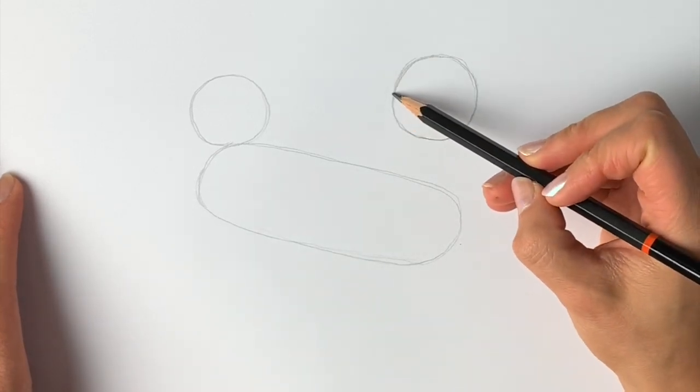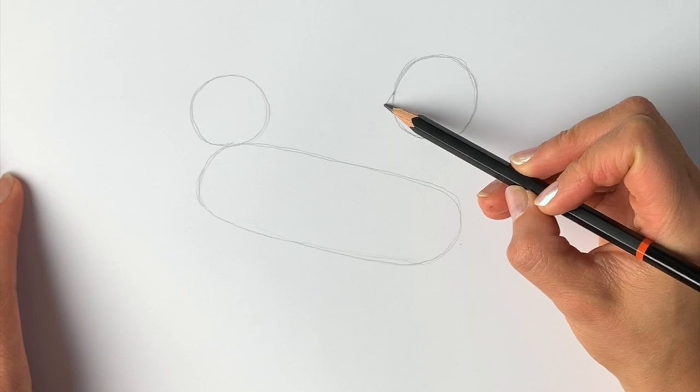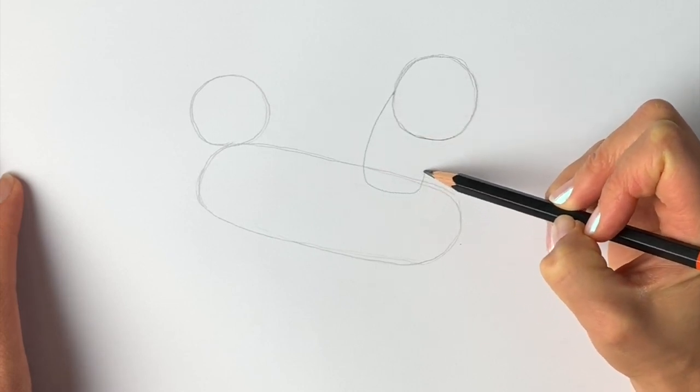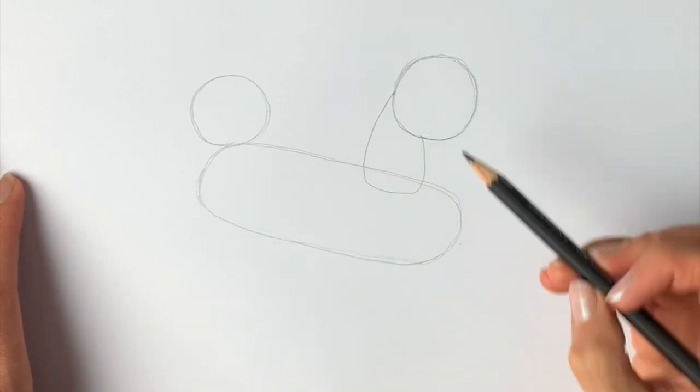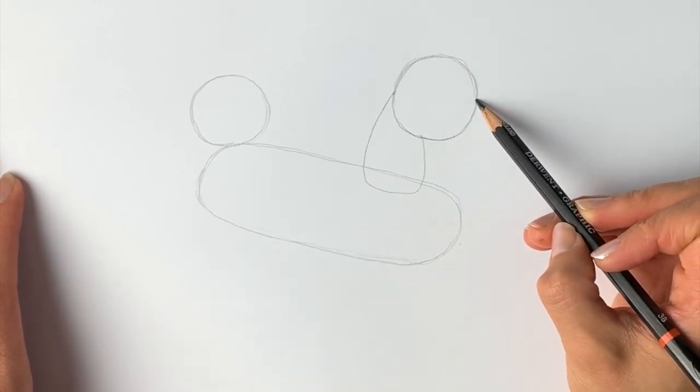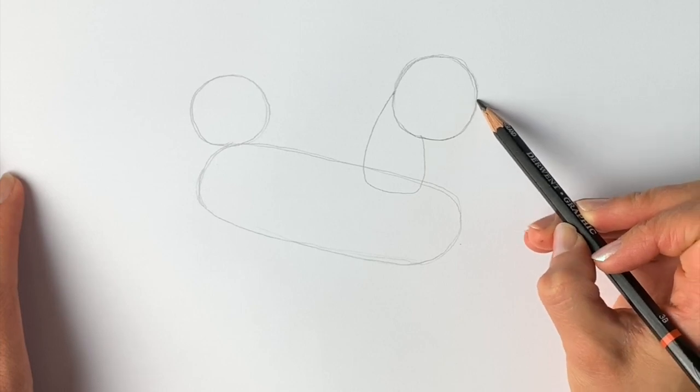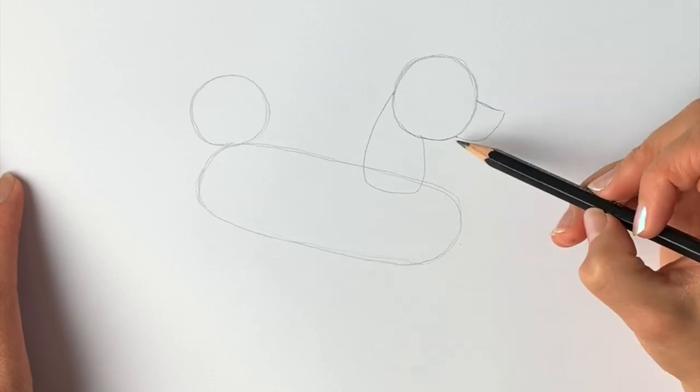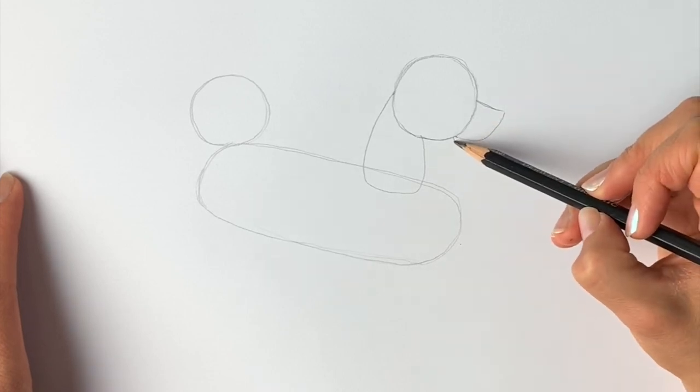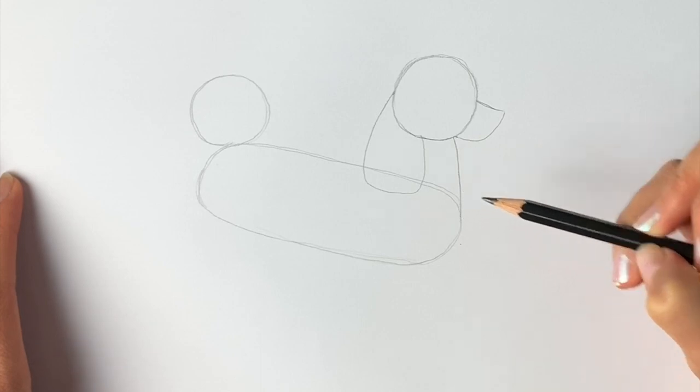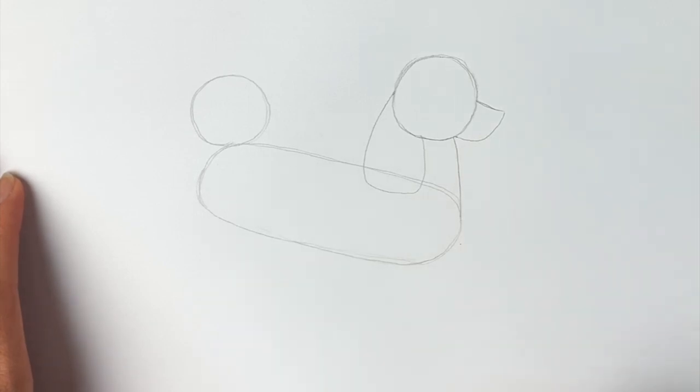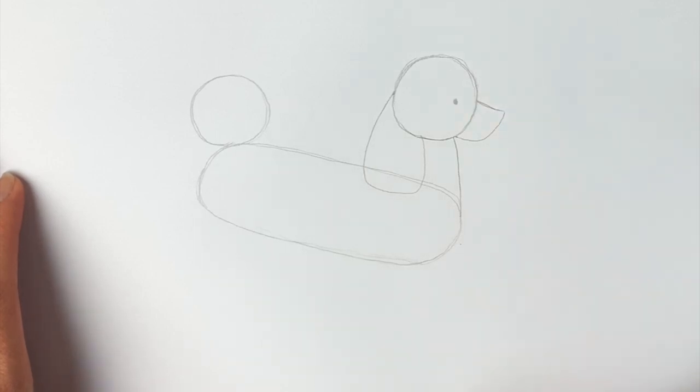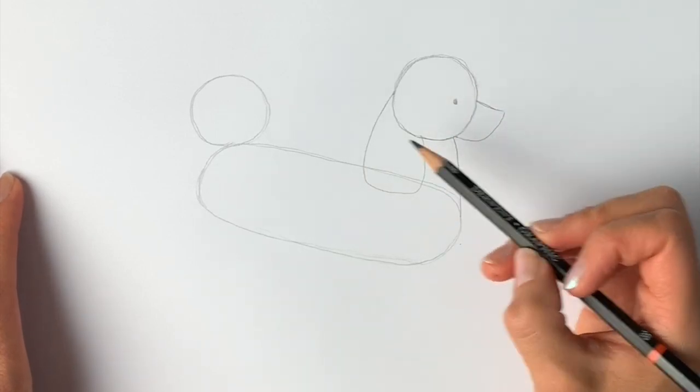Now we're going to draw the ear. Starting just here, draw a line coming down, goes across and up like that. We're going to draw the muzzle area now. Just here, a line coming outwards, comes down, and in the neck you go out and join this long sausage shape. Just going to draw in the little eye which is going to be just here.